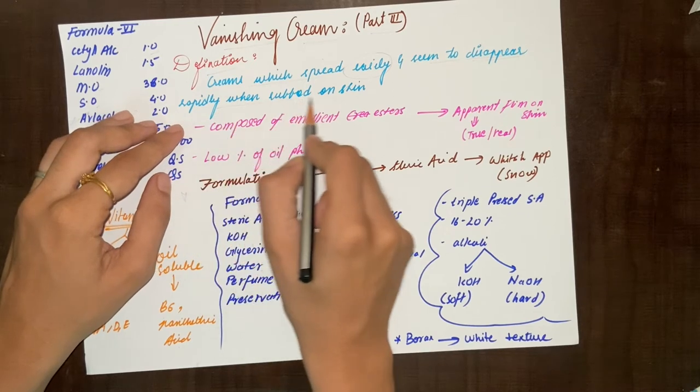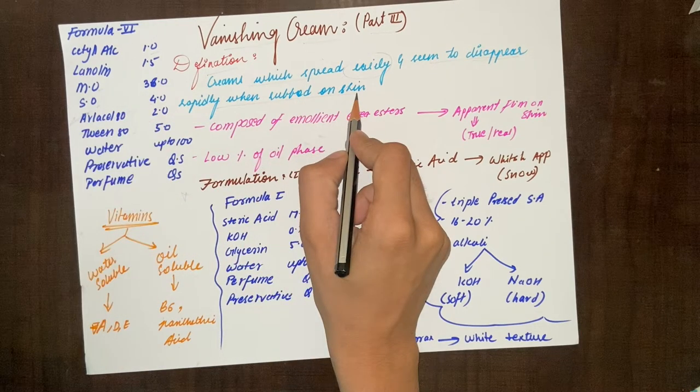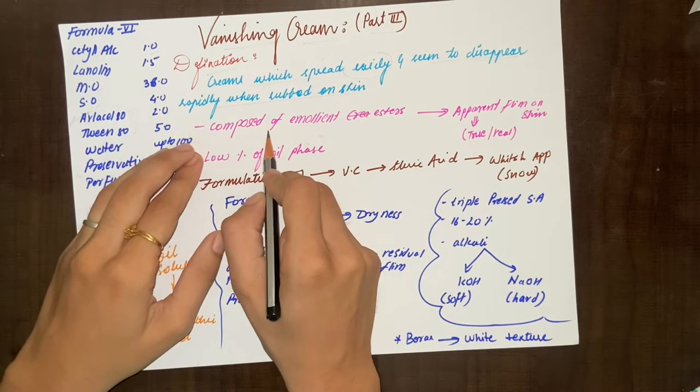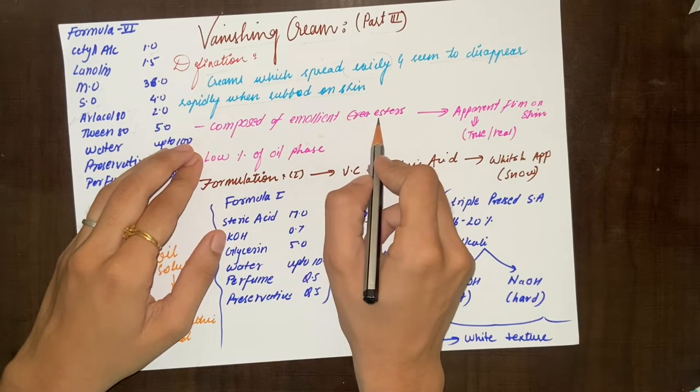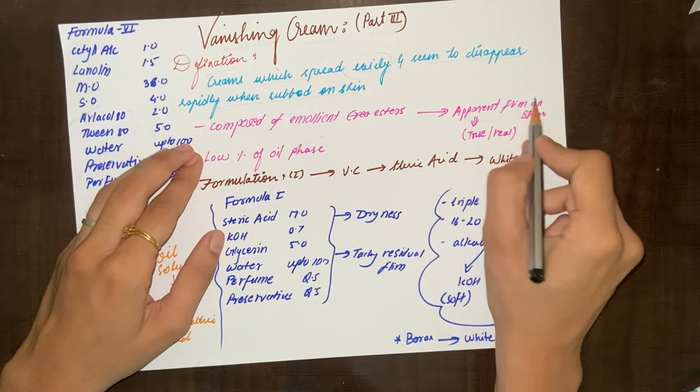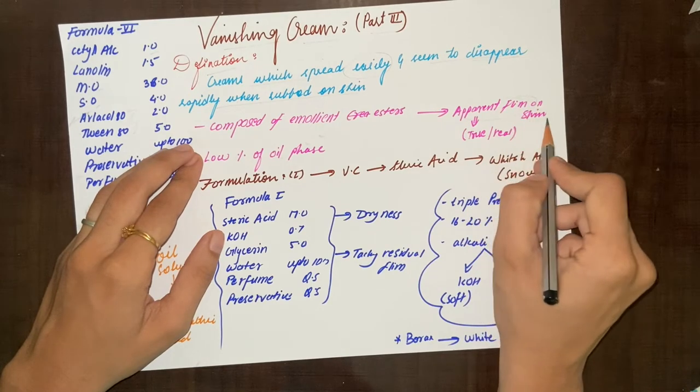That's why we call it vanishing cream - vanishing after application. This vanishing cream is composed of emollients. It will form an apparent film on the skin, which means true or real film form on the skin.